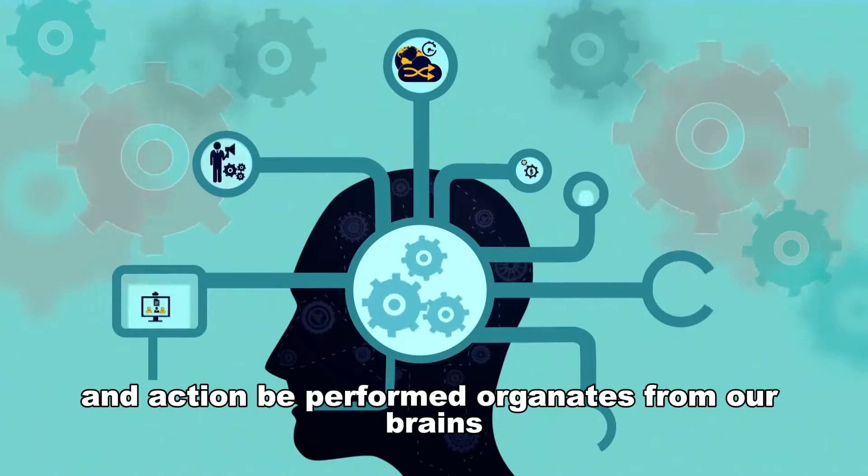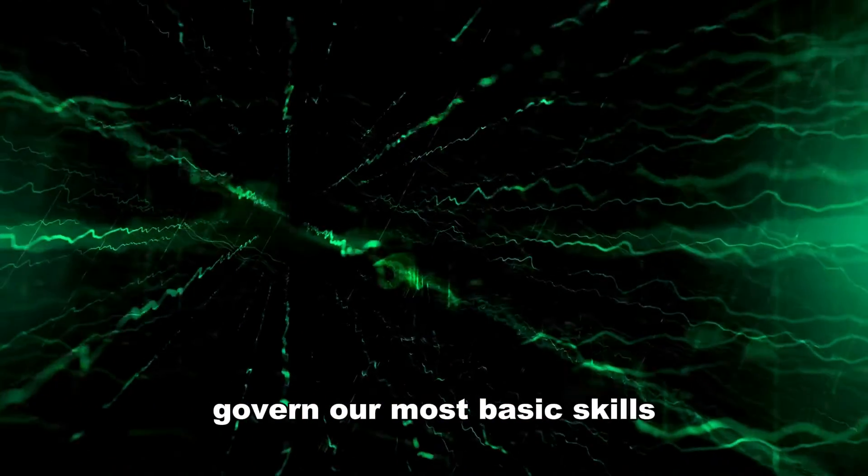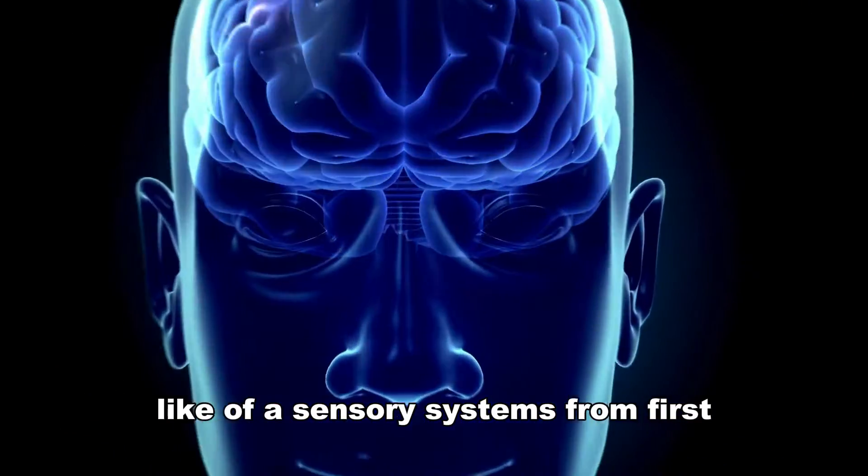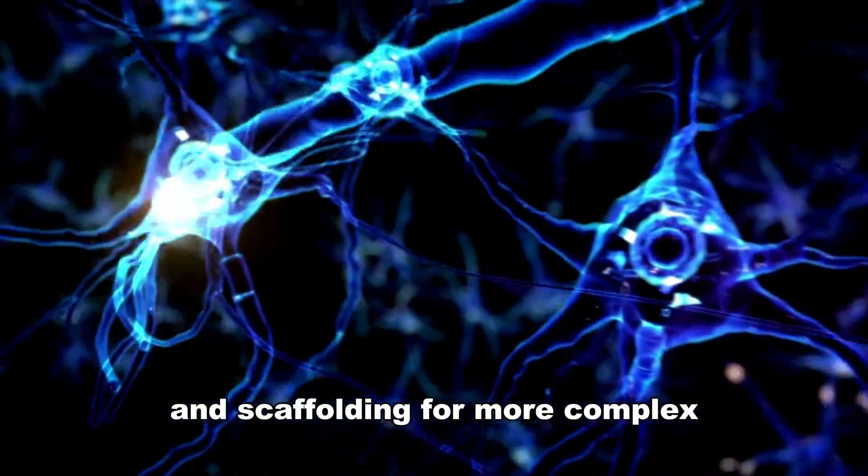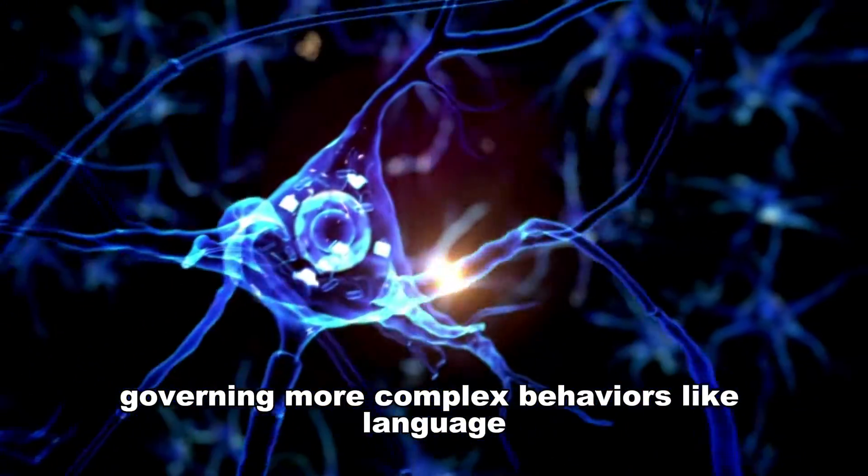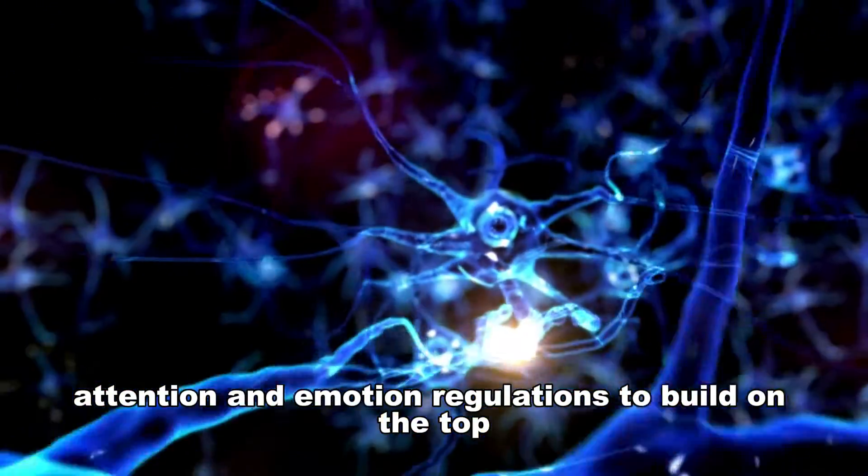Every thought, feeling and action we perform originates from our brains. The most basic circuits that govern our most basic skills, like our sensory systems, form first and provide the foundation and scaffolding for more complex circuits governing more complex behaviors like language, attention and emotion regulation to build on top.